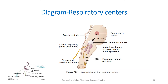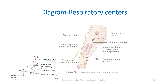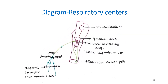Moving on to the diagram that you have to draw for this question, the main diagram should show the pontine centers — the pneumotaxic and apneustic — along with the DRG and VRG, showing vagal efference and the efference from these groups of neurons to the respiratory motor pathways. When drawn, the areas should be marked well and impulses via the vagus and glossopharyngeal to these areas should be clearly shown.